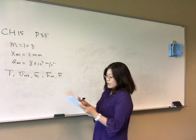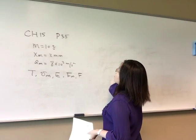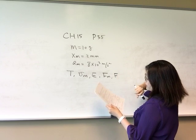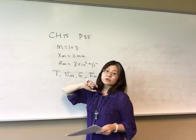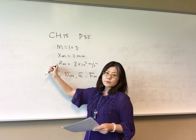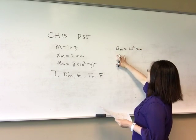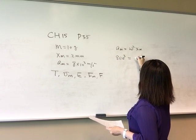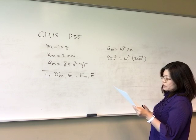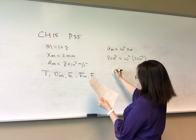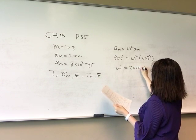Spring constant is not given, so we can't directly use omega equals square root of k over m. However, acceleration amplitude and displacement amplitude are related: am equals omega squared times xm. So 8 times 10 to the 3rd equals omega squared times 2 times 10 to the negative 3rd. Solving, omega equals 2000 radians per second.